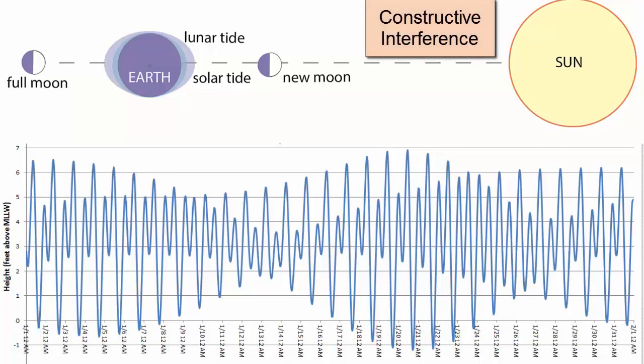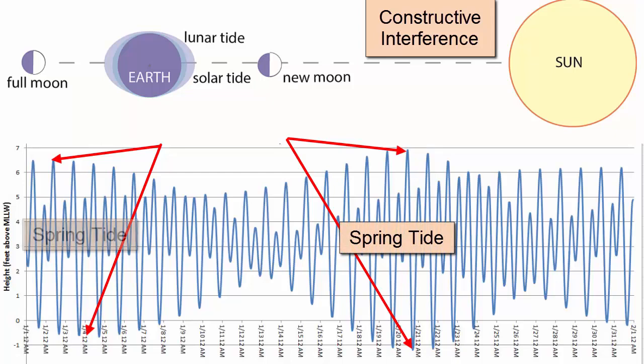When the two are in phase, which happens during full and new moons, the two bulges constructively interfere and we experience a much greater tidal range with lower lows and higher highs, spring tides.